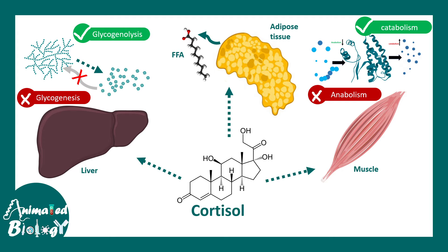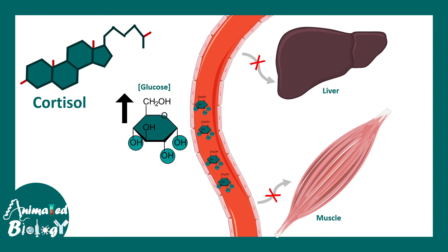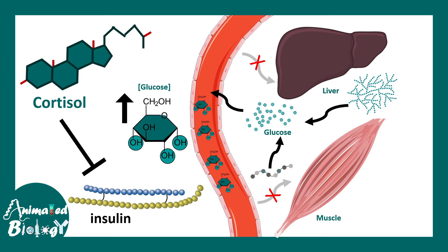Think about it this way: when your body is under stress, it needs energy, so it needs all building blocks that can produce energy. Cortisol ensures the body has enough energy when it needs it. Cortisol levels in the blood rise during stress, and it ensures that other organs like the liver and muscle do not take up glucose. This results in an increase in blood glucose level which can be channeled towards the brain, which needs to remain active in a crisis. In the liver, it also ensures glycogen is broken down and glucose is increased in the blood, and amino acids can be converted to glucose via gluconeogenesis. The moral of the story: cortisol increases blood glucose concentration — simply put, cortisol antagonizes the work of insulin.